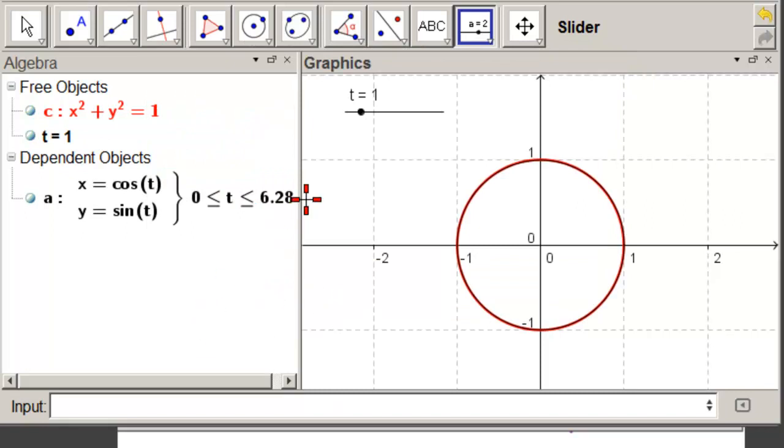And now we want a point on our circle that is at t equal to 1. So we come down in the input. We're going to call our point capital A. What's the name of our parametric function? Little a.